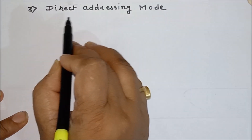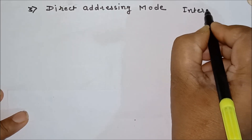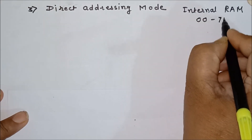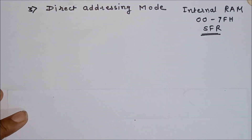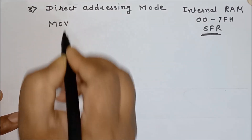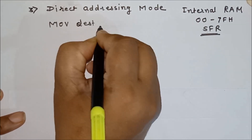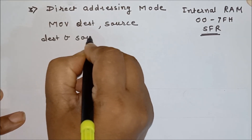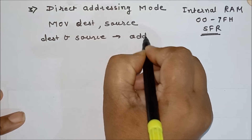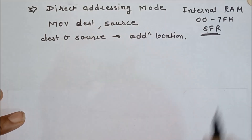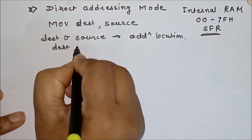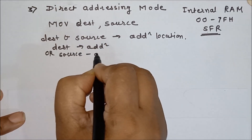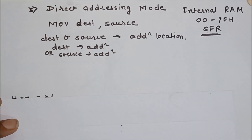The third addressing mode is direct addressing mode, which is again for internal RAM. It is used for internal RAM from 00H to 7FH and also for SFRs. In direct addressing mode, using the MOV instruction with format: MOV destination, source — the destination or source can be used as an address location.